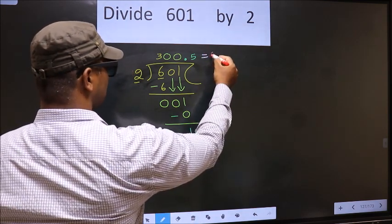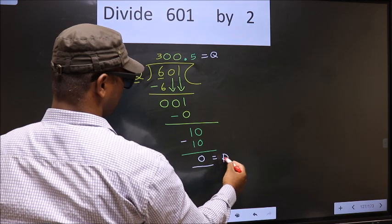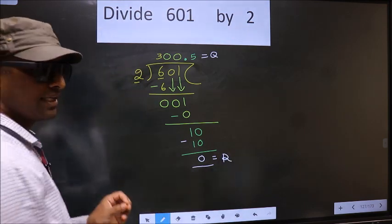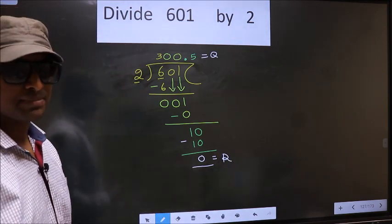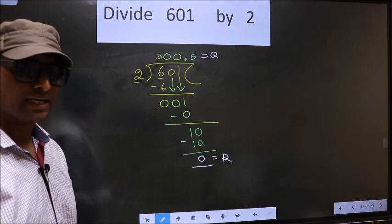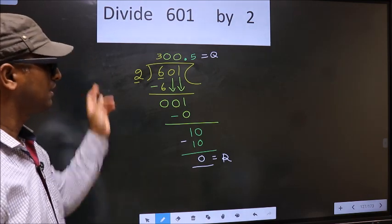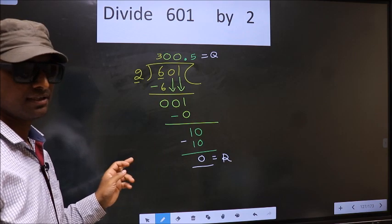So this is our quotient and this is our remainder. Did you understand where the mistake happens? You should not do that mistake.